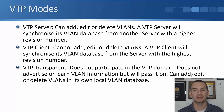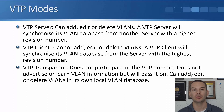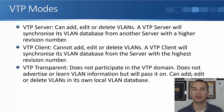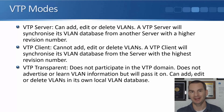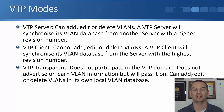On a VTP client, you cannot add, edit, or delete VLANs — it can only get information from a server. A VTP client will synchronize its VLAN database from the server with the highest revision number. Finally, a switch configured as VTP transparent does not participate in the VTP domain. It does not advertise or learn VLAN information, but it will pass it on. So if a VTP transparent switch sits between a server and client, it passes server information downstream to the client. On a VTP transparent switch you can add, edit, or delete VLANs in its own local VLAN database.